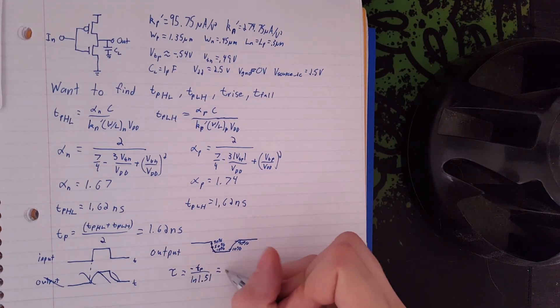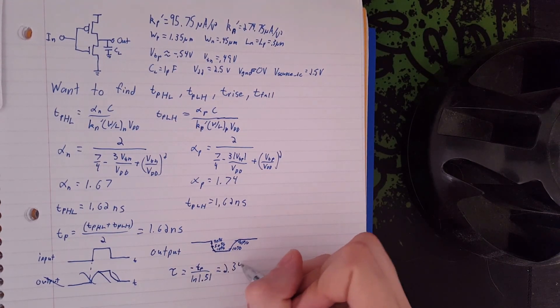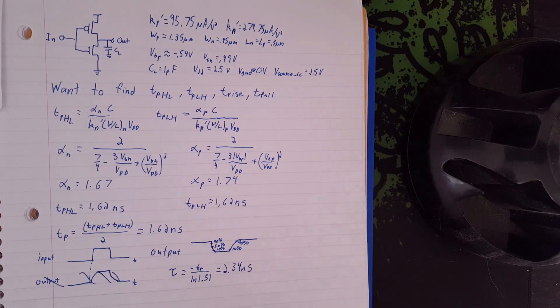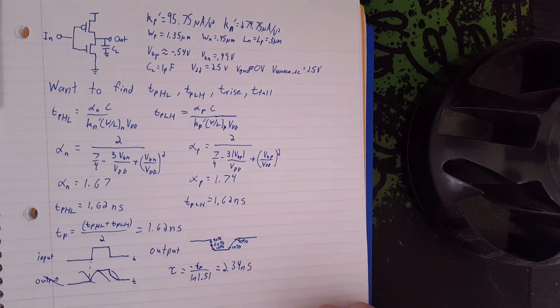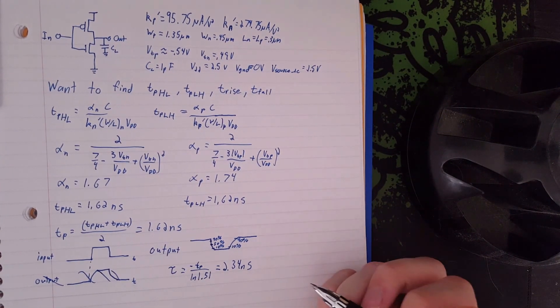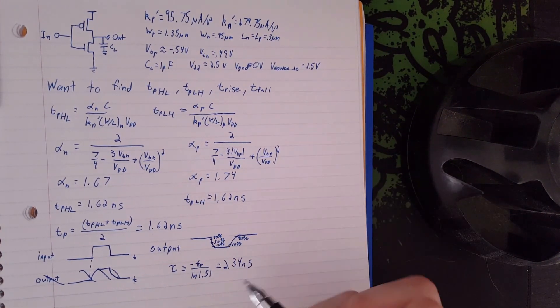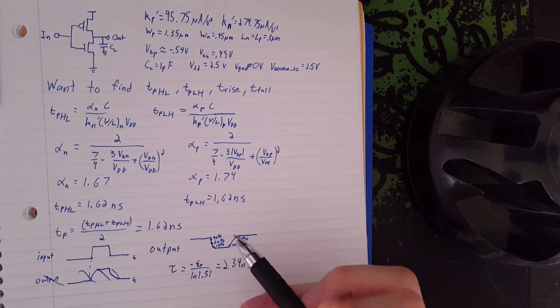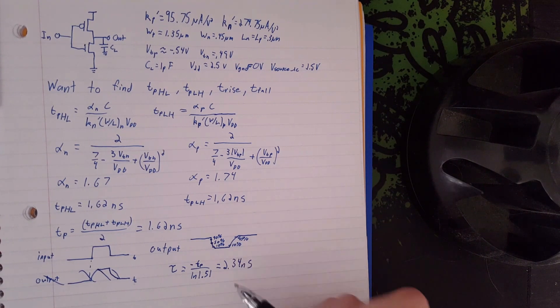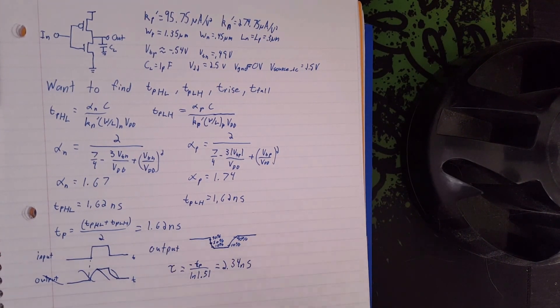So that's going to give us a tau of 2.34 nanoseconds. As you can see, this tau is greater than our TP. That makes sense because the TP is just a 50%, where tau is normally around 65% of the total. So your tau should be slightly larger than your TP.